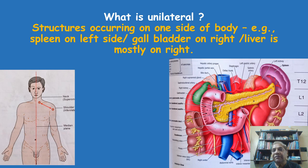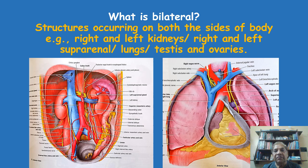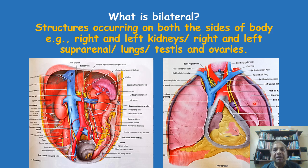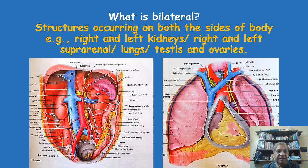Now let us move to the next slide where we will learn about bilateral organs. A bilateral organ is one that occurs on both sides — that means on the right side of the median plane as well as on the left side of the median plane. There are two such organs, one on the right side and one on the left side. For example, in the first diagram, this is the kidney on the right side of the abdominal cavity, and this is the kidney on the left side. The kidney occurs on both sides and hence should be called a bilateral organ.